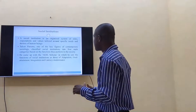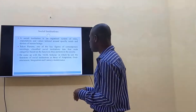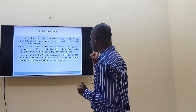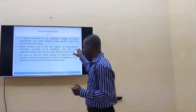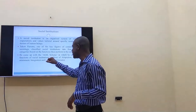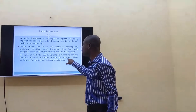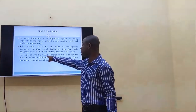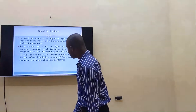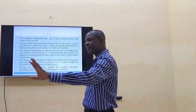A social institution is an organized system of rules and values centered around specific needs and desires of human beings. One of the key sociologists classified social institutions into four categories based on the functions they perform in society, using what we call the AGIL scheme — A-G-I-L. The AGIL scheme identifies the functions of social institutions as: Adaptation, Goal attainment, Integration, and Latency maintenance. This scheme originated from Parsons.